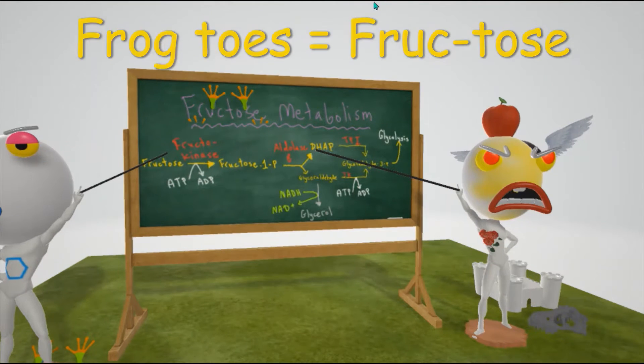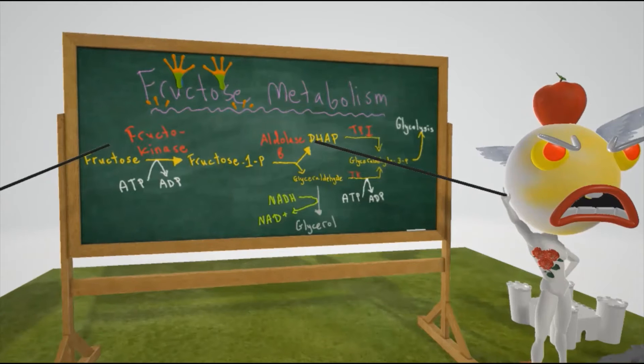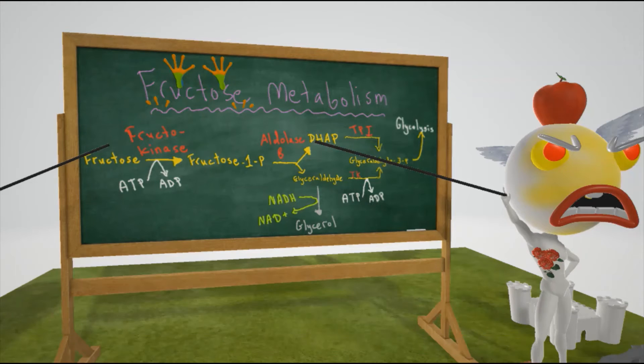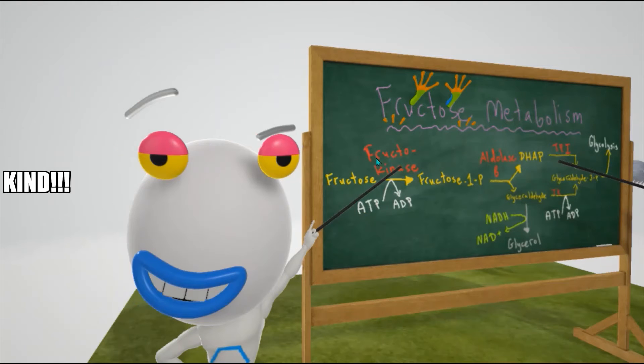This teacher here is pointing to aldolase B. Aldolase B is important for metabolizing fructose 1-phosphate. In hereditary fructose intolerance, aldolase B is deficient. That's what hereditary fructose intolerance is, a deficiency in aldolase B. Therefore, fructose 1-phosphate will accumulate. In this disease, fructose 1-phosphate gets trapped in the cells, and that's why it's so much worse than essential fructosuria. That's why this teacher is mean, as opposed to the other teacher who appeared to be kind.